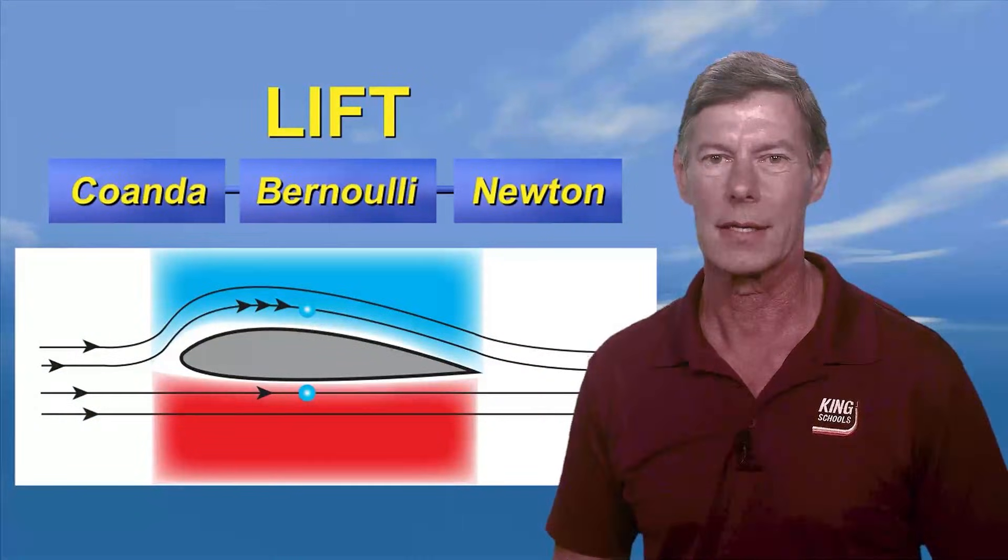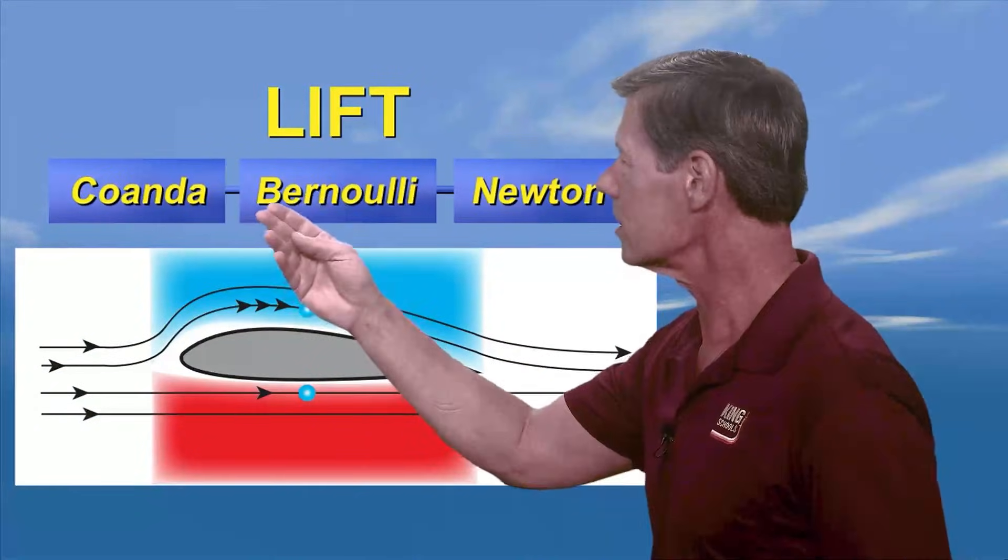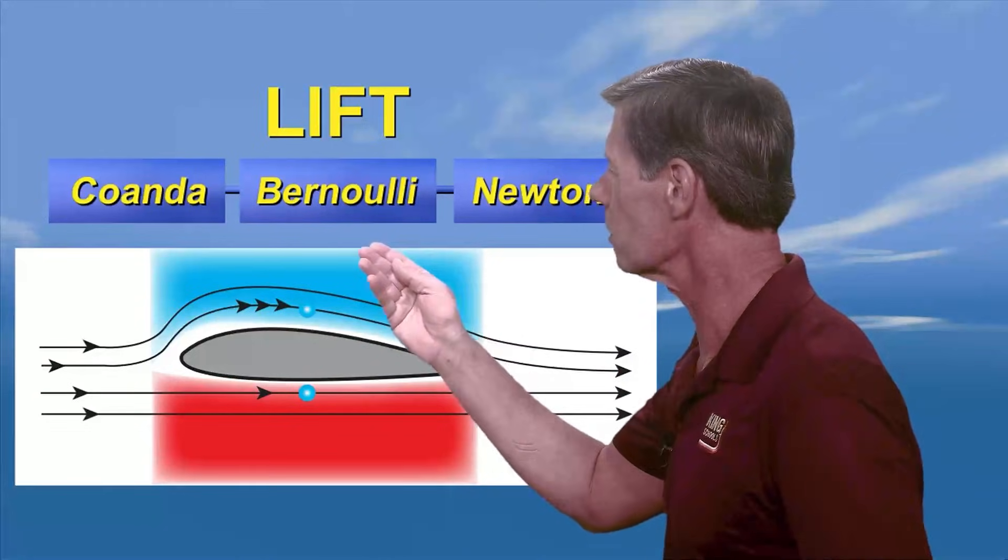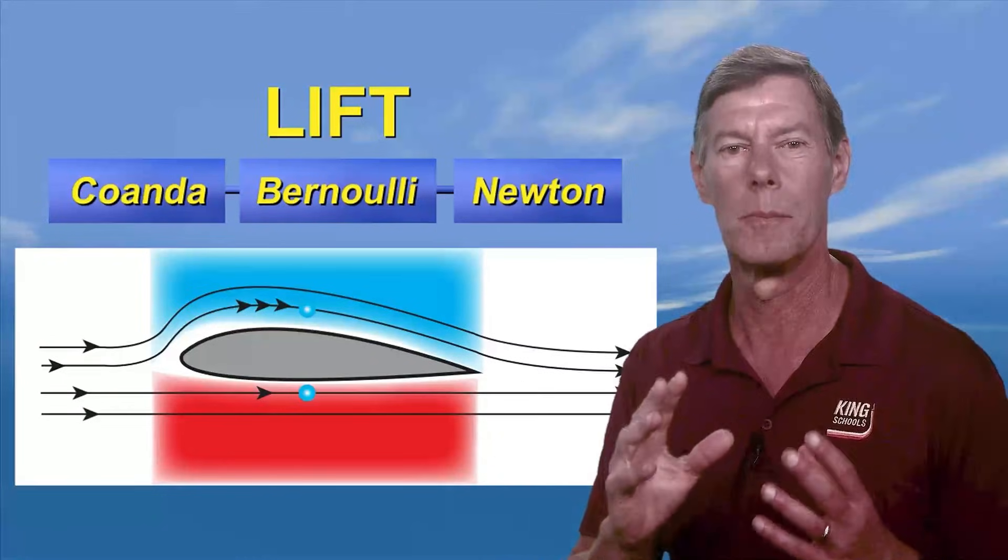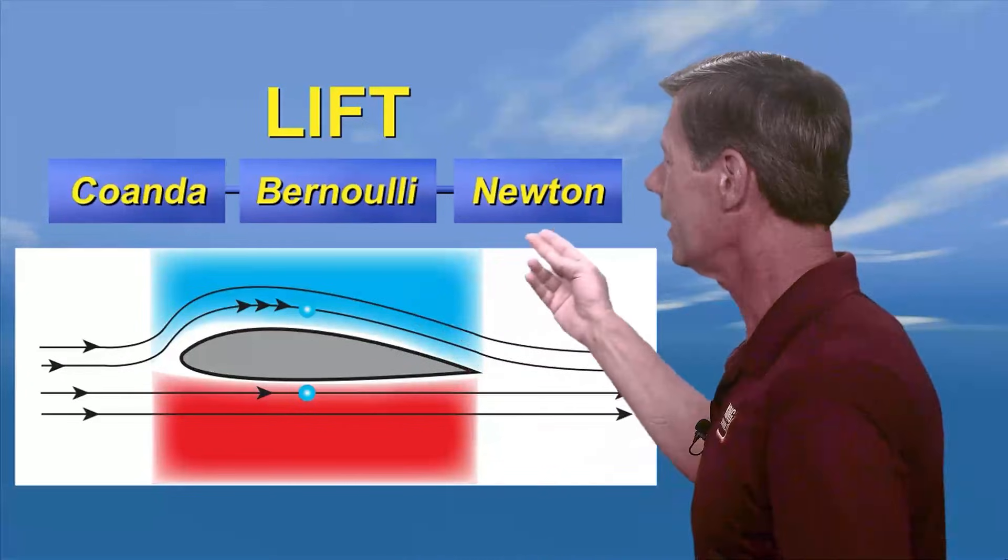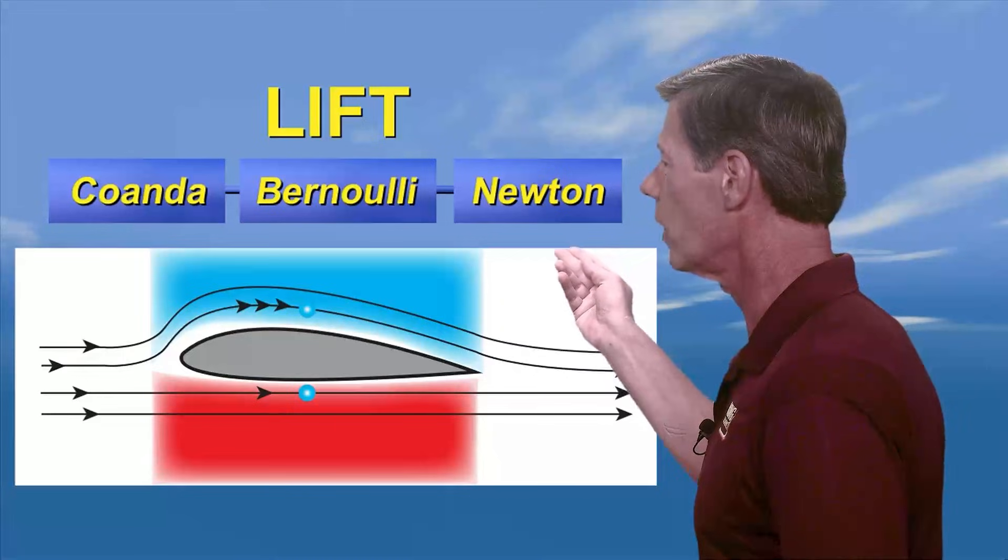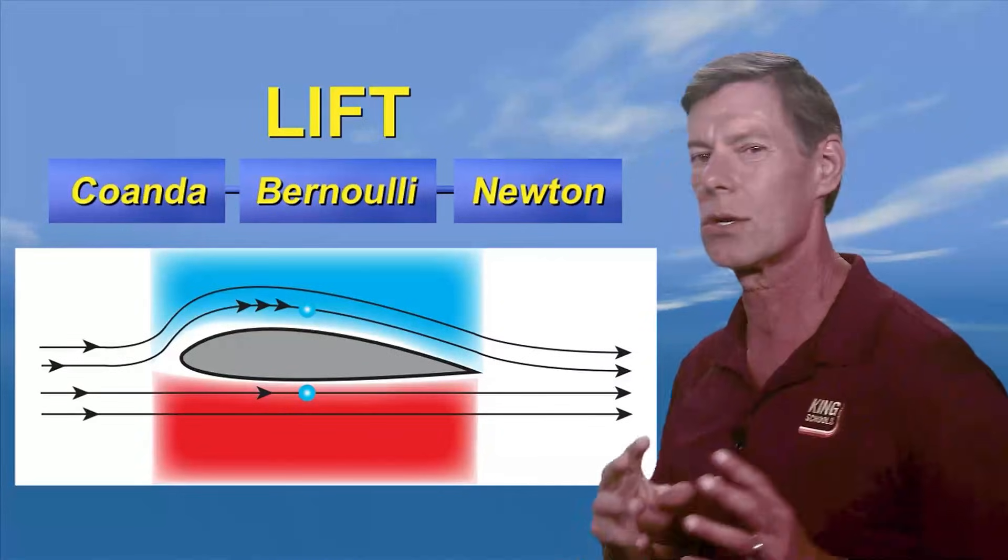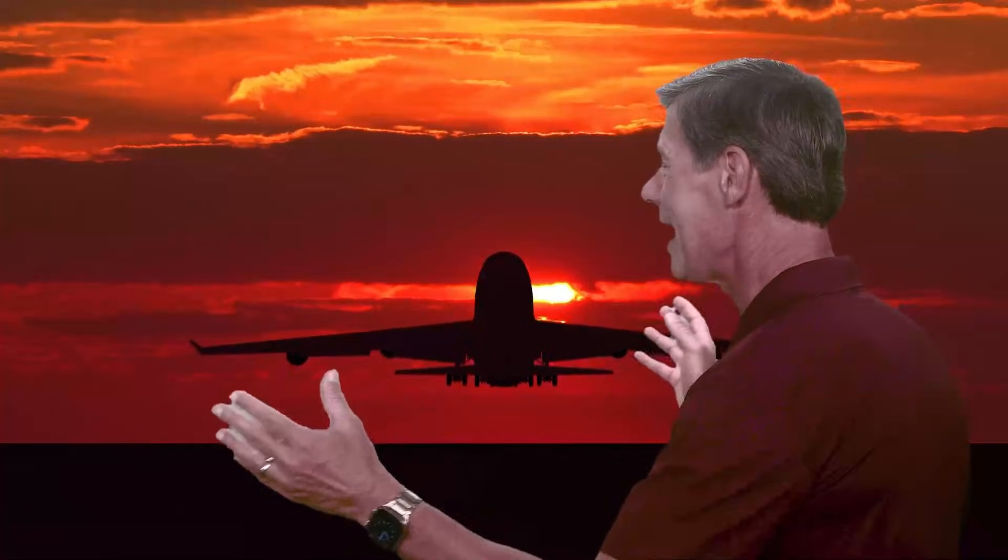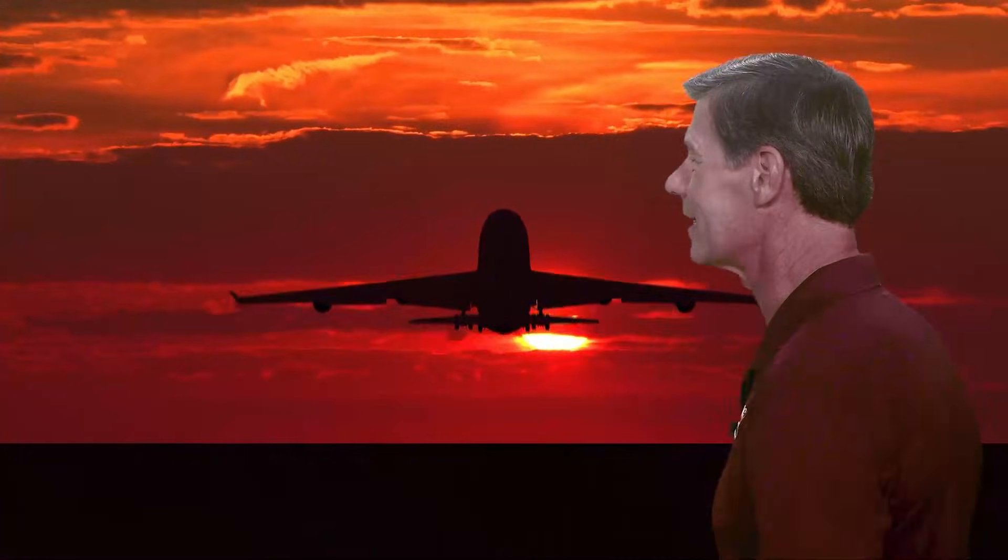So what we've learned here is that lift is really a team effort. First, the Coanda effect assures that air sticks to the wing. Next, Bernoulli's principle shows us that there's a pressure difference in the faster air above the wing and with increased pressure below the wing. And finally, Newton's laws explain how the wing's downward push creates a reaction force responsible for the heavy lifting. With everything working together, lift can even create the magic of making a behemoth like this fly.